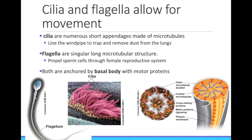Both cilia and flagella are attached to the cell membrane by a structure called a basal body, shown on the right. This is made up of microtubules and motor proteins.